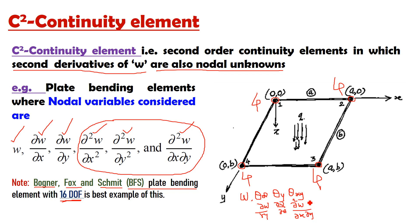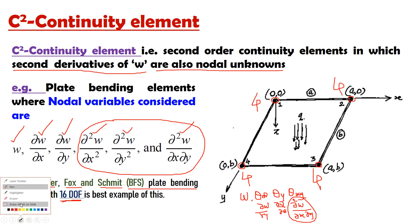Because the second order derivative D²W/DX·DY is involved, the BFS plate bending element is the best example of a C2 continuity element. That is, the second order derivative of deflection W is involved in the nodal unknowns. So this is the C2 continuity element.